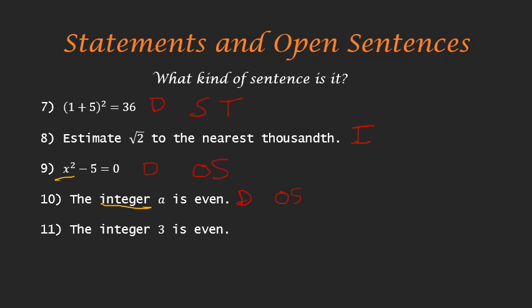"Integer 3 is even" — I got this sentence by plugging in 3 for a in the last open sentence. This is declarative, and we can evaluate it: is 3 even? No, it's odd. So this is a statement, but it's a false statement. I could plug many things in for a, and anything I plug in gives me a statement — like this example — that is either true or false.